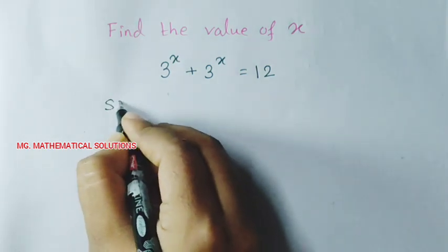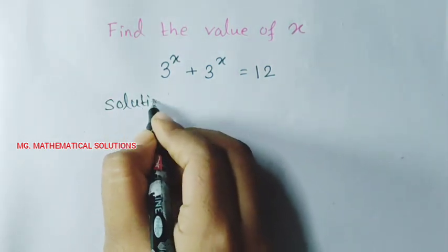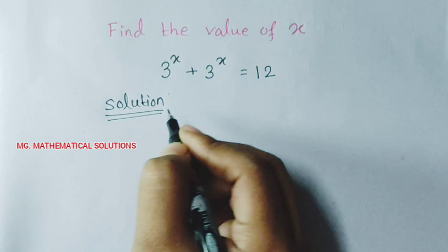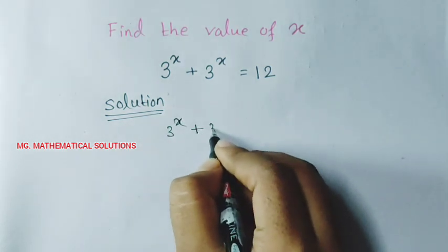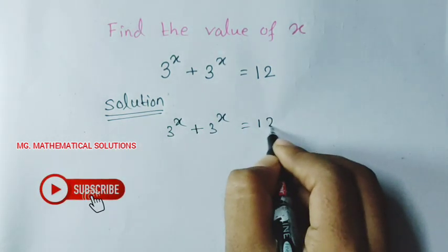Let's see the solution. First we rewrite this equation 3 to the power x plus 3 to the power x equal to 12.